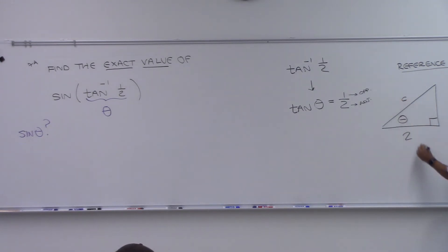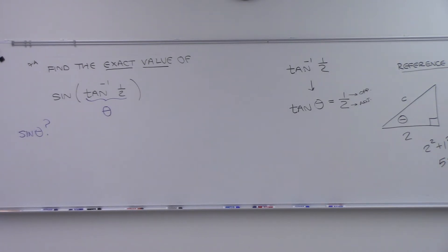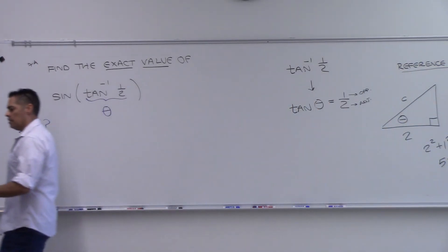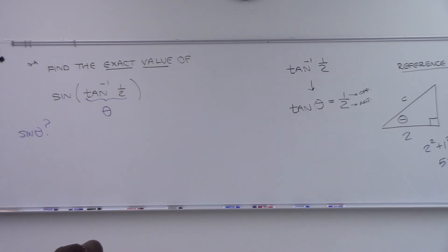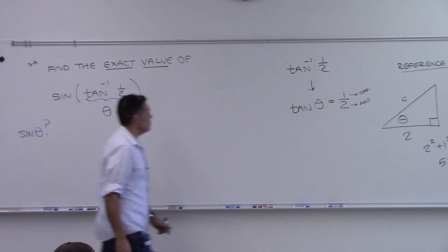I'll call the hypotenuse C: 2² + 1² = C², which is 4 + 1 = 5, so C² = 5, meaning C = ±√5. Algebraically it's plus or minus, but since it's the length of the hypotenuse, it must be positive — so C = √5.